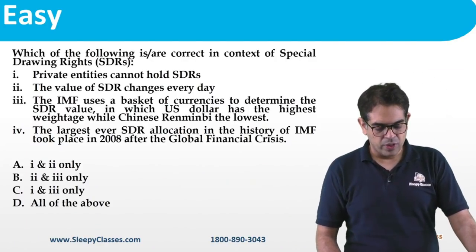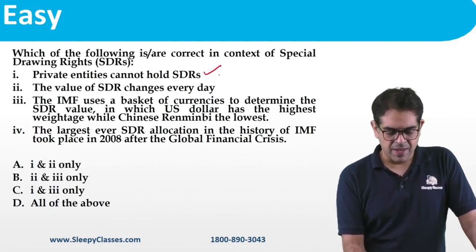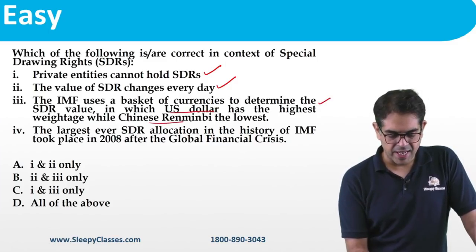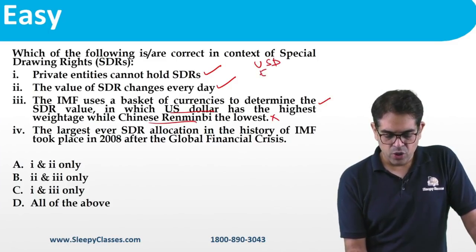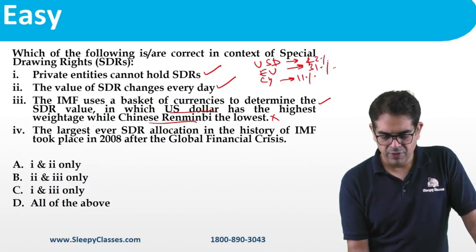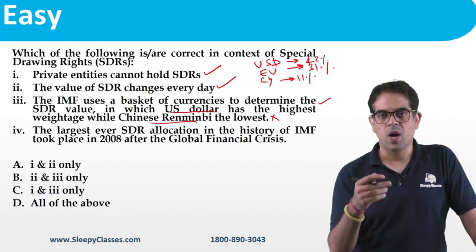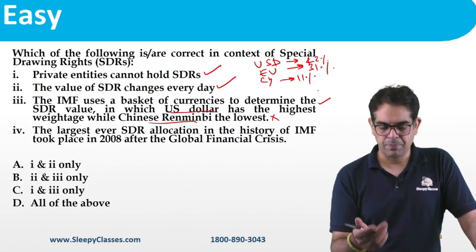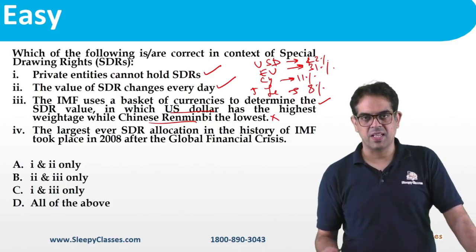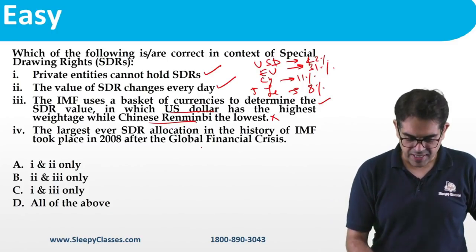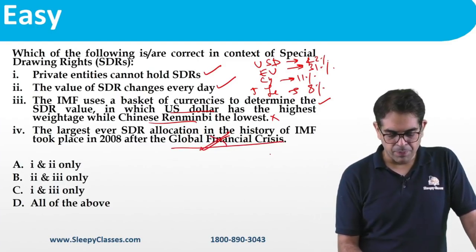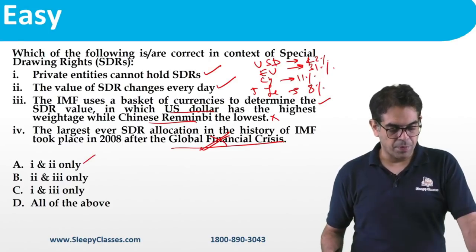Next is SDR (Special Drawing Rights), which was in the news. Private entities cannot hold SDRs — this is correct. The value of SDR changes daily — correct. So statements 1 and 2 are correct. The IMF basket: US dollar has the highest weightage (~42%), euro ~31%, Chinese renminbi/yuan ~11%, then Japanese yen and British pound at ~8% each (the lowest). The largest-ever SDR allocation happened recently post-COVID (not post-GFC, which is the incorrect statement). So the correct answer is 1 and 2.